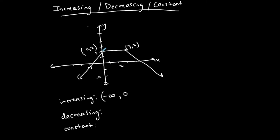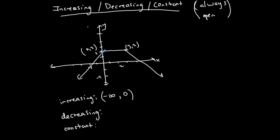Even though this point is on the graph, when writing increasing, decreasing, or constant intervals, it should always be an open interval — never brackets. These intervals are always open, so I put a parenthesis. I'm not writing the domain; I'm writing the range of x-coordinates where the function is increasing. Always open intervals, always with respect to x.